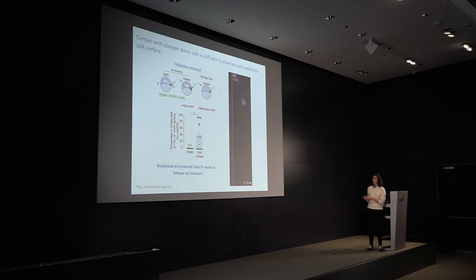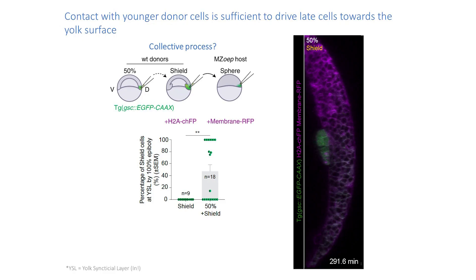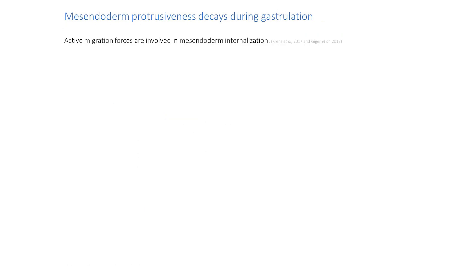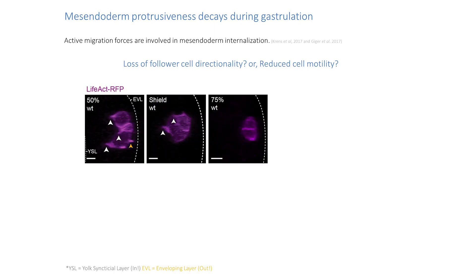We had hints from previous work that active migration forces are important for mesendodermal internalization, giving us a hint of where to look. We had two potential hypotheses: maybe the later cells have no directionality and don't know they have to go inside, or maybe they just cannot move. To test this we repeated the same transplants but now labeled cell protrusions using LifeAct, which labels F-actin.